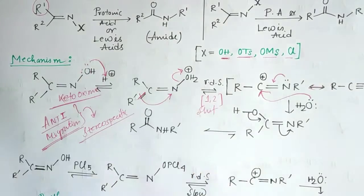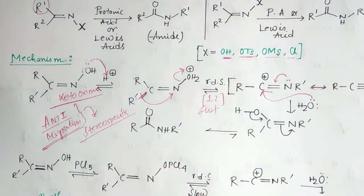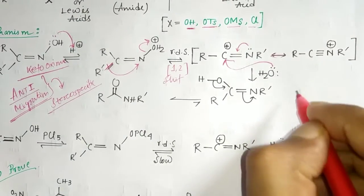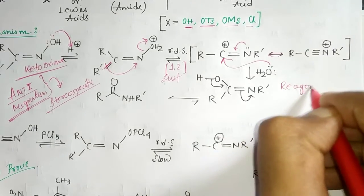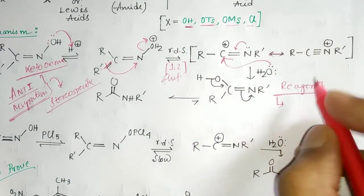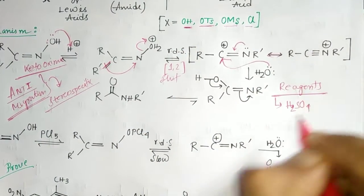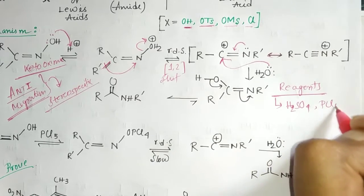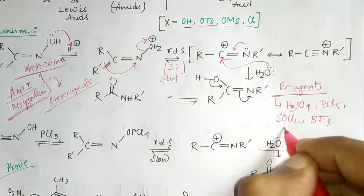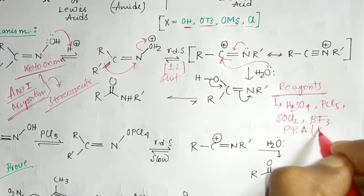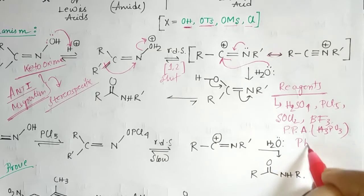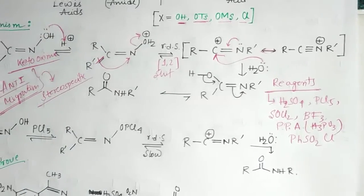Now let's see another mechanism using PCl₅. The reagents used for this reaction include H₂SO₄, PCl₅, SOCl₂, BF₃, polyphosphoric acid (PPA), H₃PO₄, and PhSO₂Cl — these kinds of reagents are basically used for this reaction.